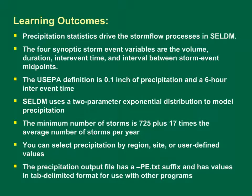In this module, we learned that precipitation statistics drive the storm flow process in SELDM. The precipitation volume is applied to the highway site and the upstream basin; the precipitation duration affects the timing of runoff; and the time between storm event midpoints determines the number of storms per year. The four synoptic storm event variables are volume, duration, inter-event time, and interval between storm event midpoints. The U.S. EPA definition of a runoff generating event is 0.1 inch minimum precipitation with a minimum inter-event time of six hours. SELDM uses a two-parameter exponential distribution to model precipitation statistics, and calculates the minimum number of storms as 725 plus 17 times the average number of storms per year. You can select precipitation by region, by site, or by entering user-defined values. The precipitation output file has a "-PE" suffix and values in tab-delimited format for use with other programs.